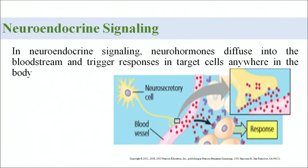In neuroendocrine signaling, neurohormones diffuse into the bloodstream and trigger a response in target cells wherever they are present in the body — combining both the nervous and endocrine systems.